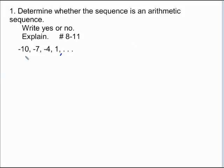That means the same numbers between each term. Between negative 10 and negative 7, it's increasing by 3. Between negative 7 and negative 4, it's increasing also by 3.